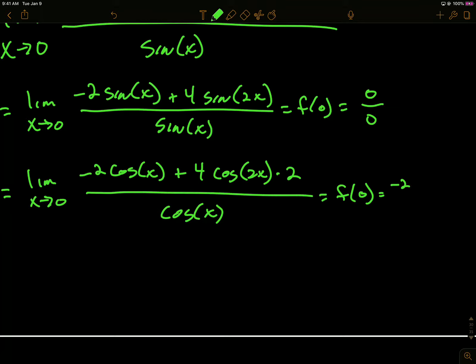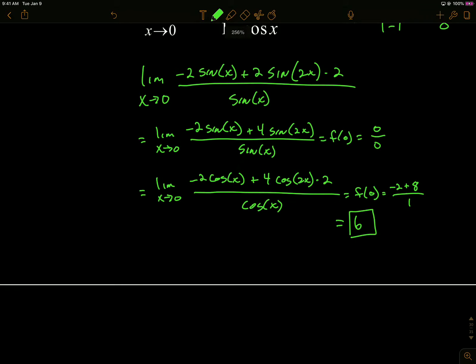Let's try direct substitution again. Cosine of 0 is 1, so I'm getting negative 2 times, so that's negative 2. Plus, if I get a cosine of 0 again, there's 1, so 4 times 2 is 8. So negative 2 plus 8 over cosine 0 is 1. I'm getting 6 over 1, so I get 6. So it's a double L'Hôpital worked.